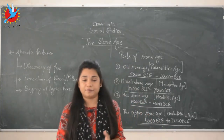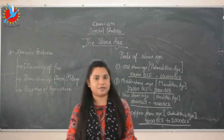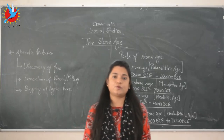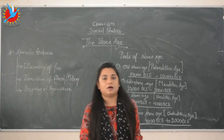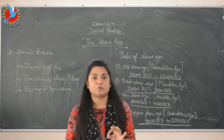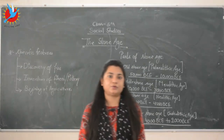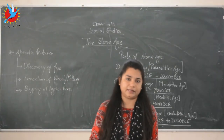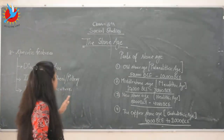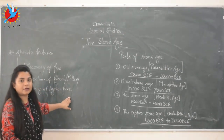Before proceeding further, let me recall what I taught in the last class. The topics were evolution of humans and the types of hominids: Homo habilis, Homo erectus, and Homo sapiens, along with the Neanderthals and the Cro-Magnons. I suggest you to watch that video before proceeding. Now, in the Stone Age, the tools were made of stones mostly, and that is how it got its name. This age has some specific features: the discovery of fire, the invention of the wheel and pottery, and the beginning of agriculture.